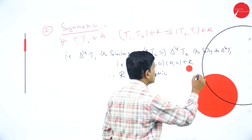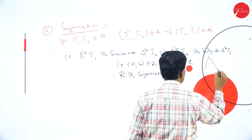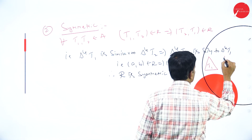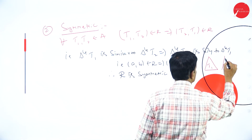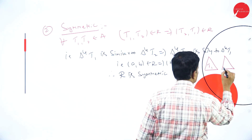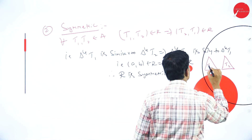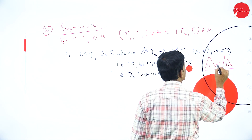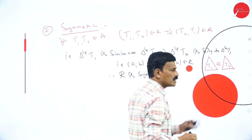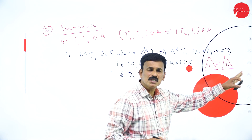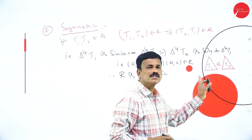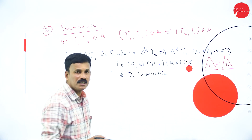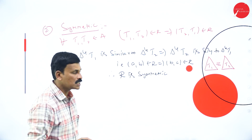Consider two triangles, triangle T1 and triangle T2. If T1 is similar to T2, then T2 is also similar to T1. So therefore the symmetric property is satisfied.